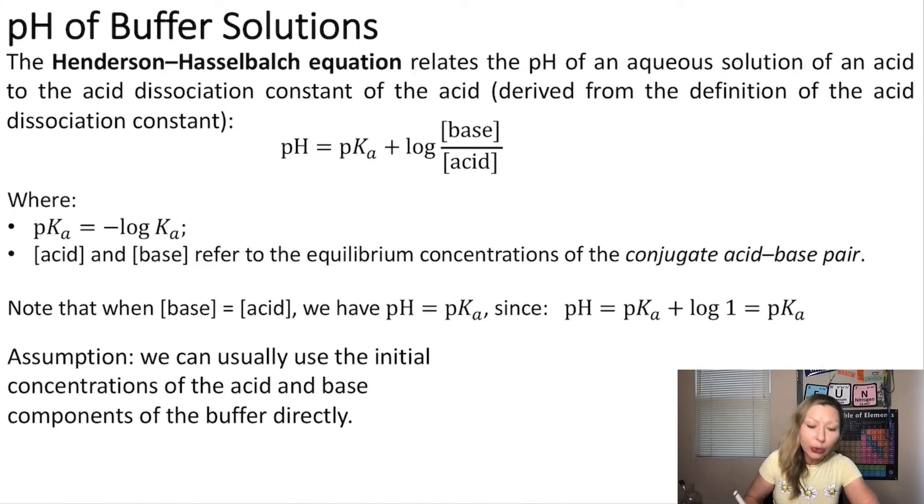we are going to use the Henderson-Hasselbalch equation. This relates the pH of an aqueous solution of an acid to the acid dissociation constant. This is actually derived from the definition of the acid dissociation constant. We are not going to go into details here. I'm just going to show you the formula.